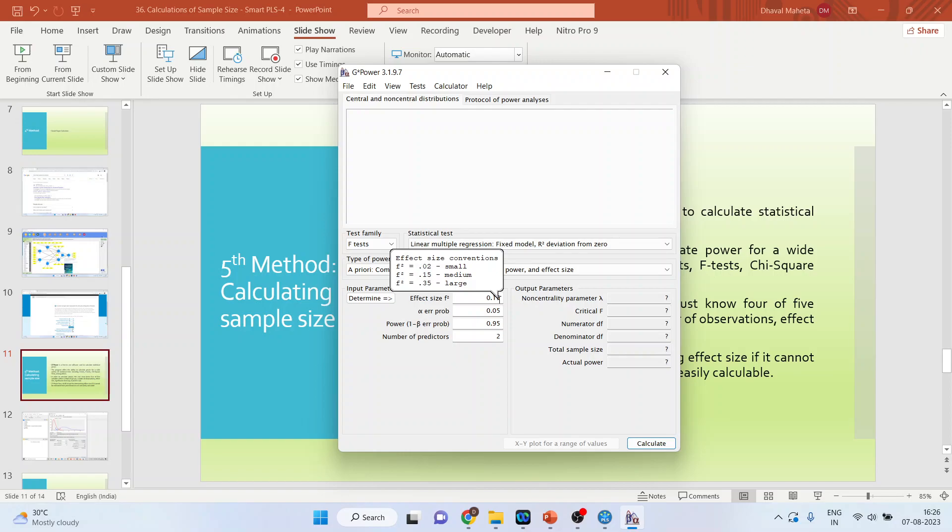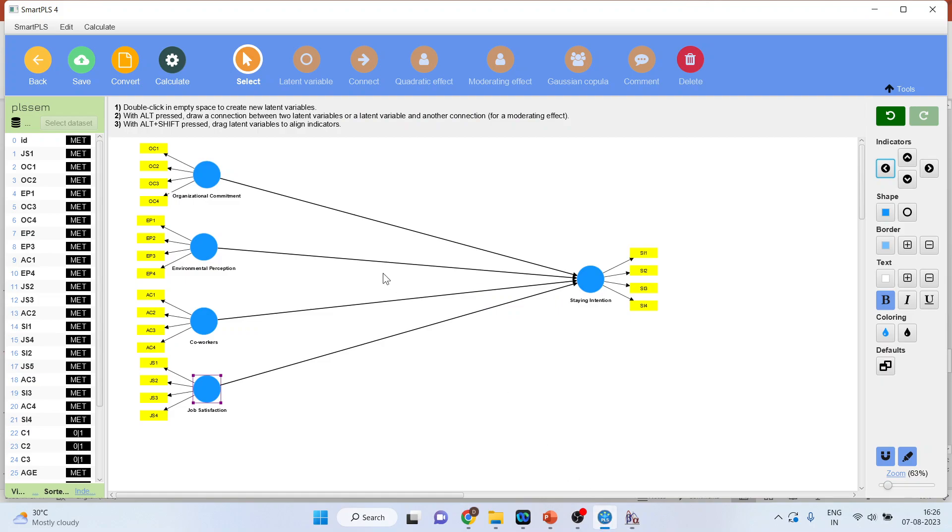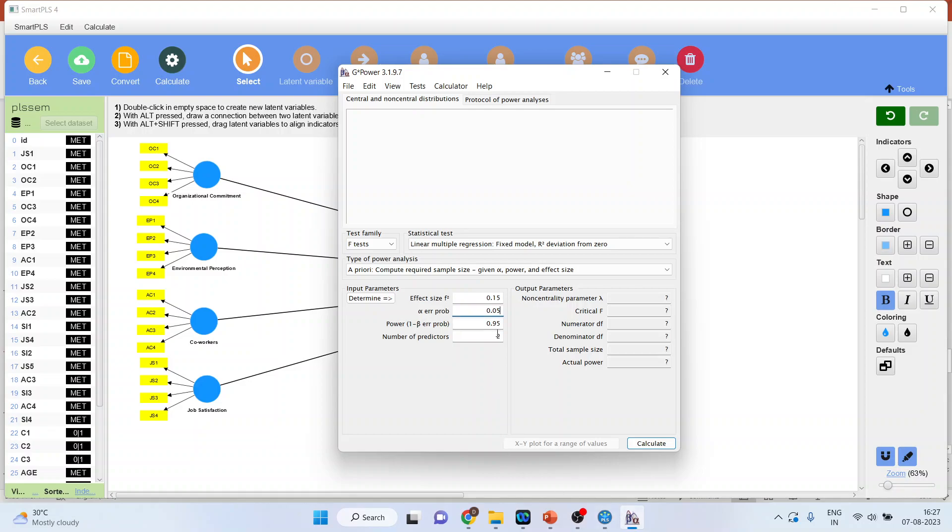Alpha is the significance level or rather the p-value, how much we keep it. So normally we keep it as 0.05. Number of predictors. So let's again go back in the model. Number of predictors means the independent variables: 1, 2, 3, 4. I will not count this because this is a dependent variable. In case if you are having a moderator variable, moderator variable here, you will not calculate it. You will only calculate the predictors. 1, 2, 3, and 4. So let's insert 4 here. And we will press calculate.